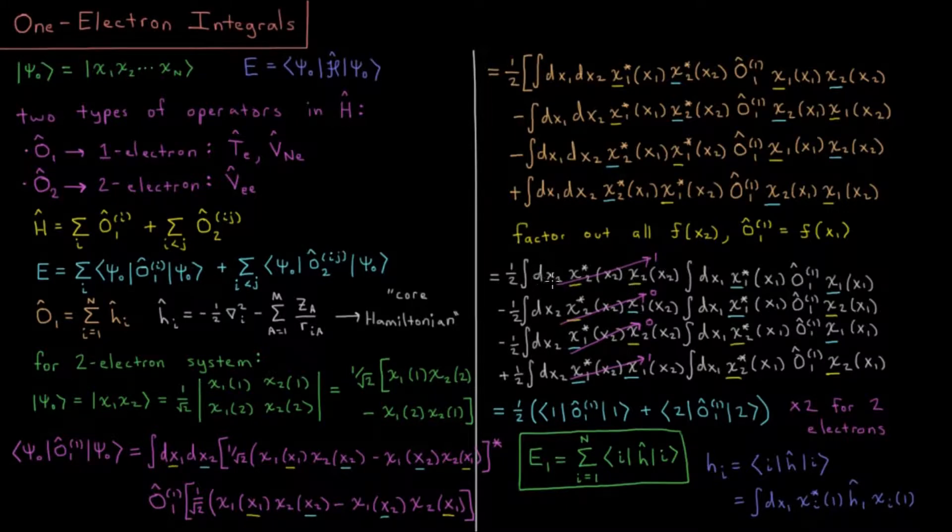Because dx₂ integrating over x₂ of χ₂* χ₂ for x₂ in each case, that's just the definition of normalization if it's the same orbital in each case. It doesn't matter that this is 2 or 1, that's just a dummy index at this point.